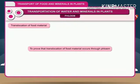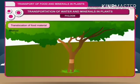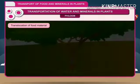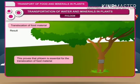Activity: To prove that translocation of food material occurs through phloem. Method: In a woody stem, all the outer parts — the phloem — are removed in the form of a ring or girdle, including the phloem along with the bark. It is kept moist by placing a wet cloth around the ring. After two to three days, a swelling is observed just above the ring. This portion of the stem swells due to accumulation of food material in the tissues, because the food prepared by the leaves cannot reach below the ring due to removal of phloem. Result: This proves that phloem is essential for the translocation of food material.